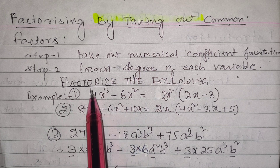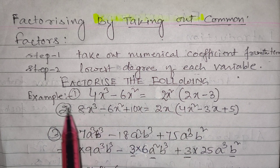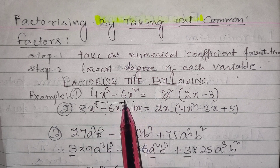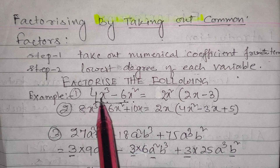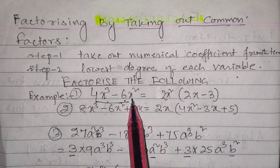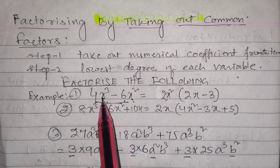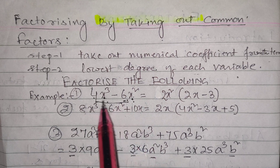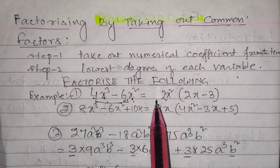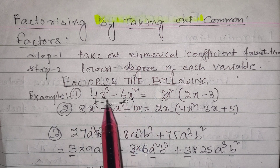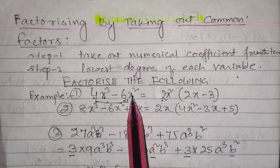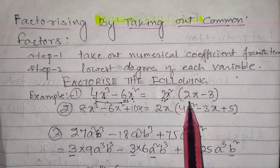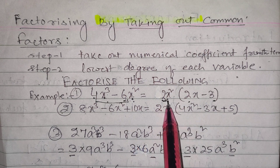Example one: factorize 4x³ - 6x². Here 4 and 6 are numerical factors, and x³ and x² are the variable parts. The common numerical factor of 4 and 6 is 2. The lowest degree of x³ and x² is x². So the common factor is 2x², giving 2x²(2x - 3).